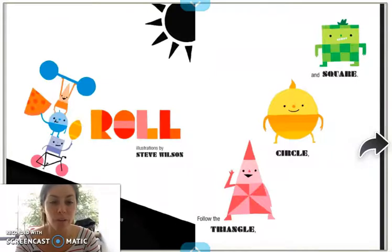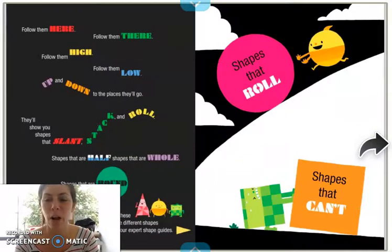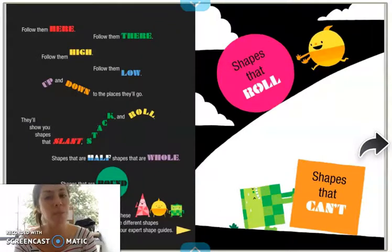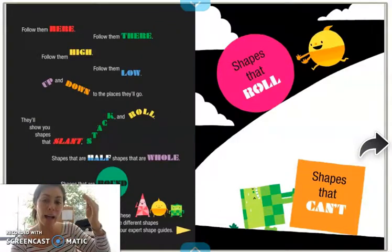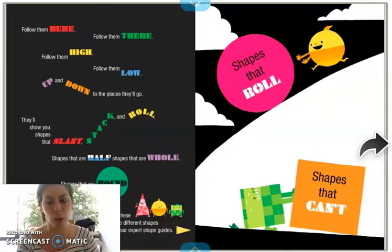Follow the triangle, circle, and square. Follow them here, follow them there, follow them high, follow them low, up and down to the places they'll go.